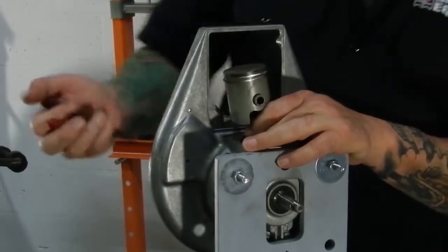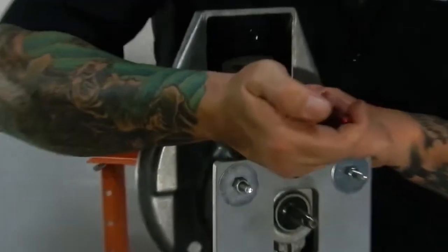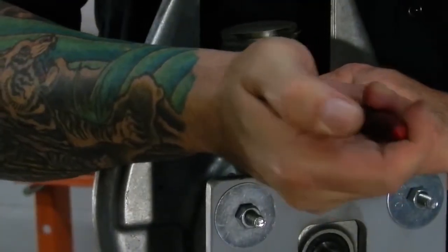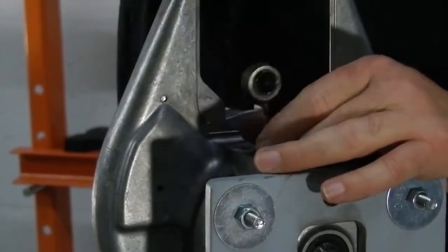Once that pin is through enough, we can reach around with the needle nose and we can pull it out the rest of the way. Now we can remove our piston.